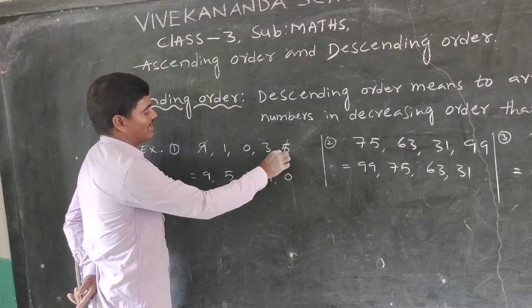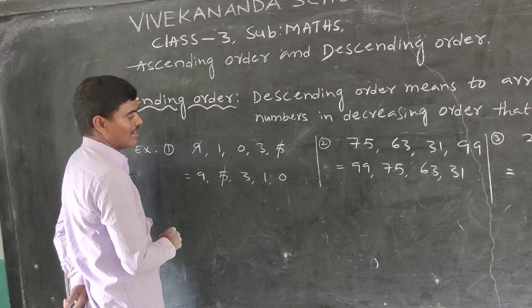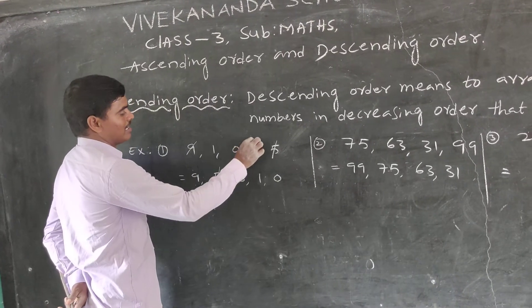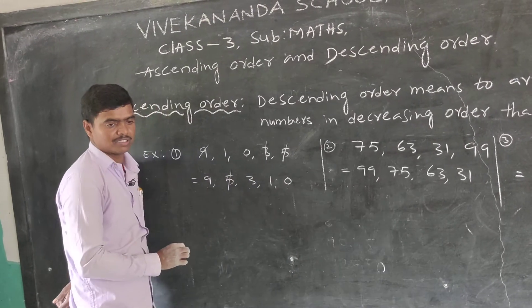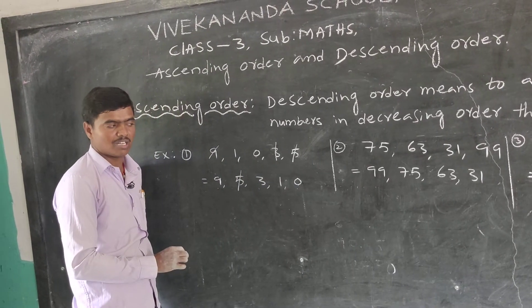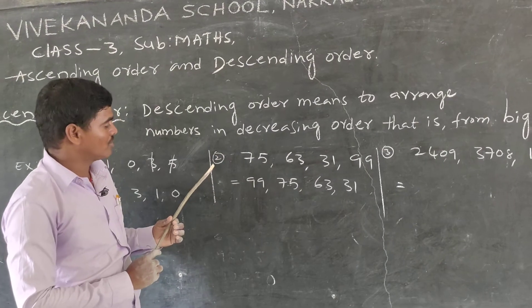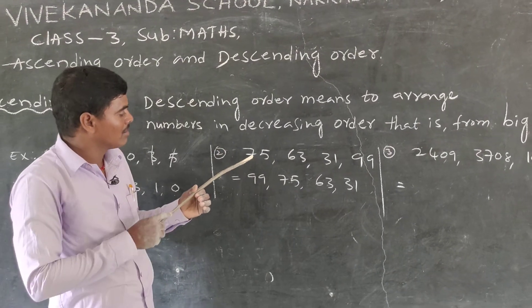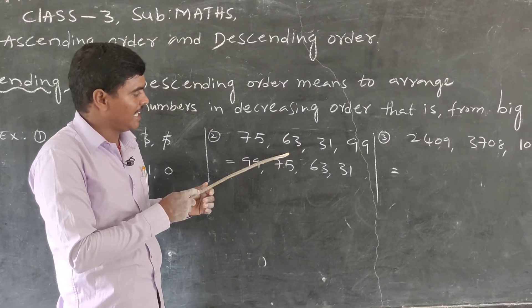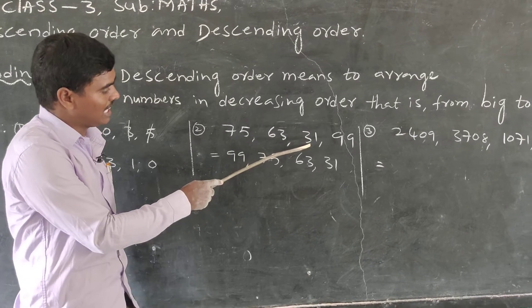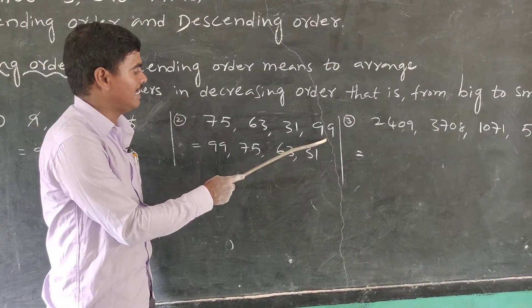Next, from the remaining numbers, the next biggest is 3. So the descending order is: 9, 5, 3, 1, 0.